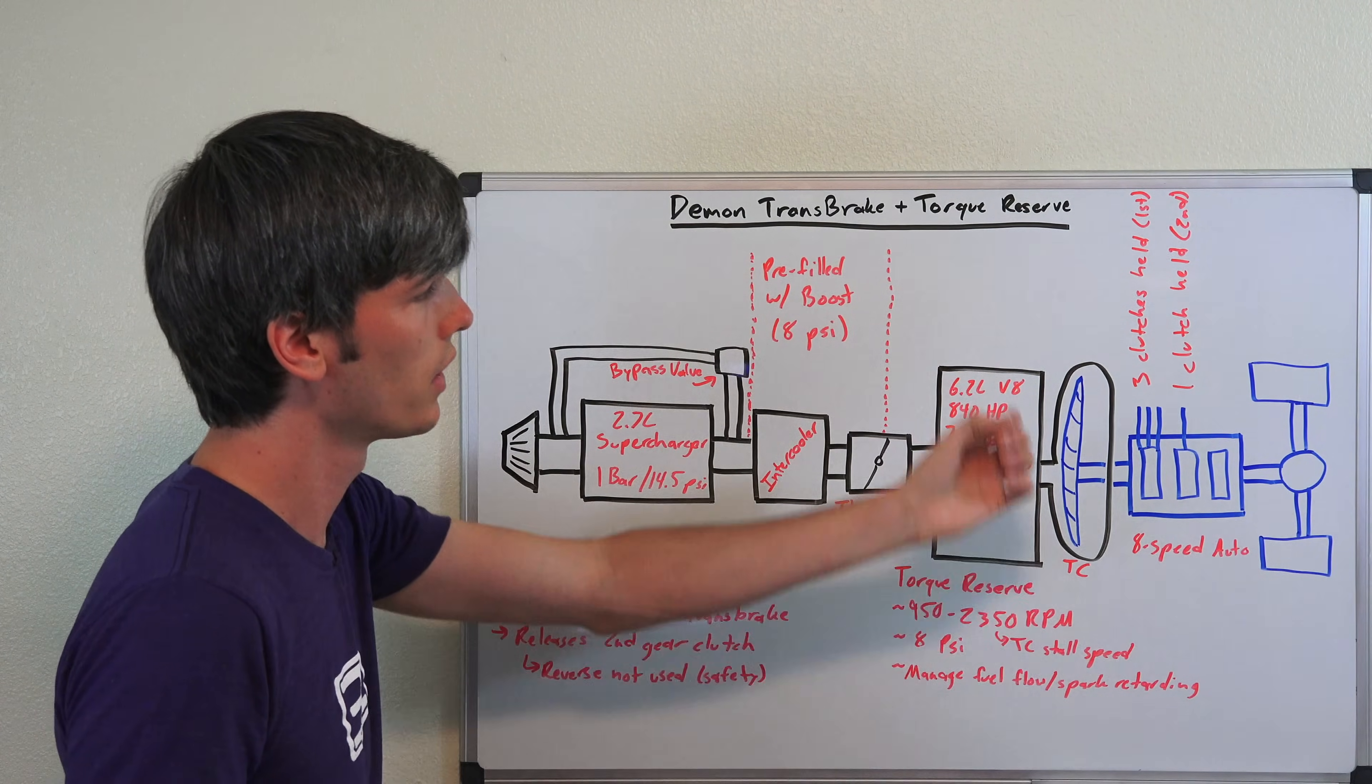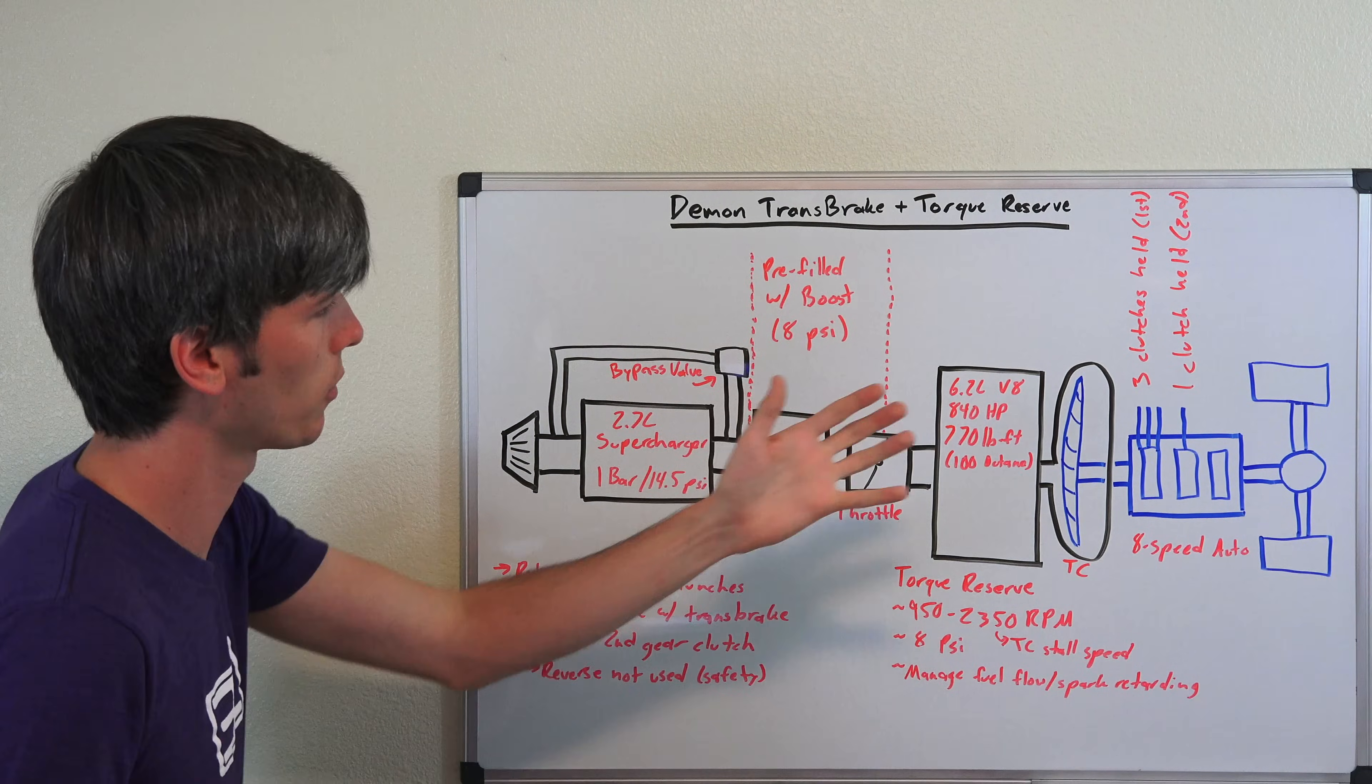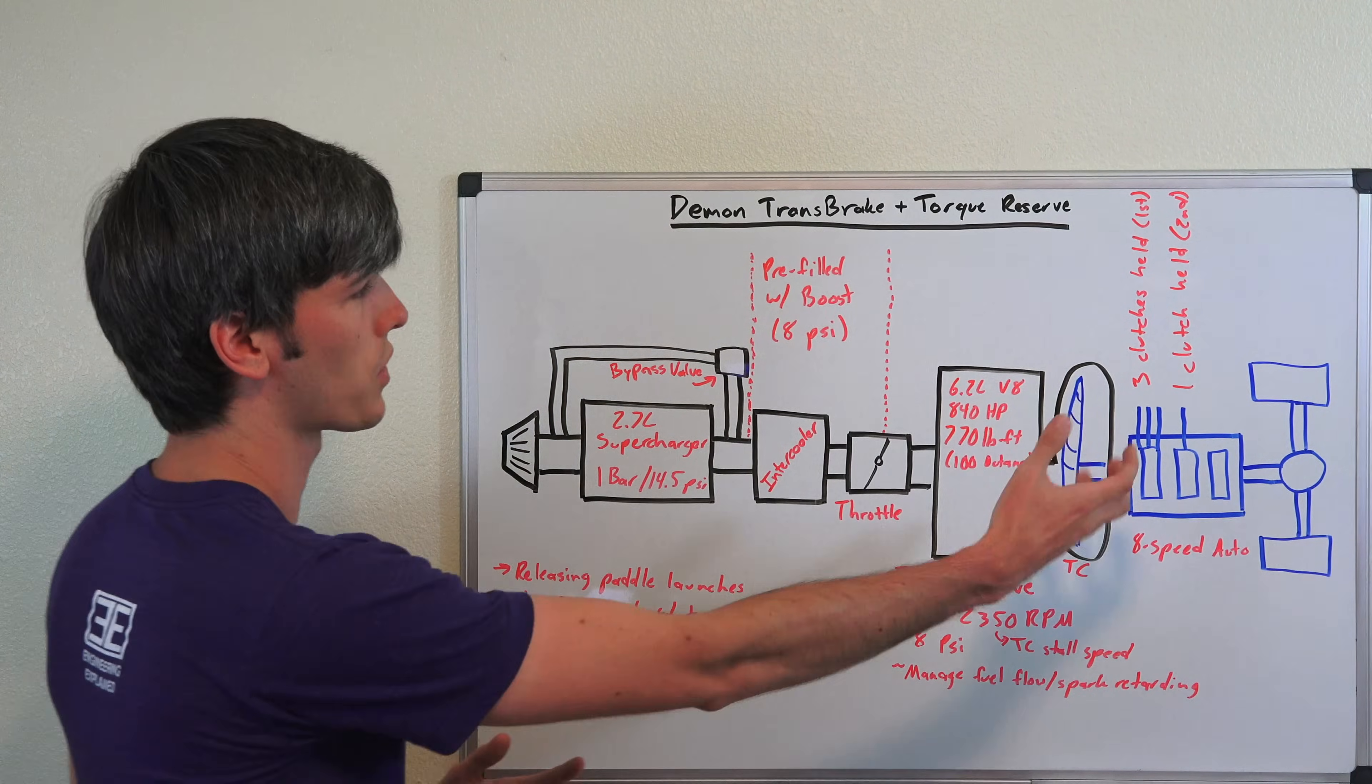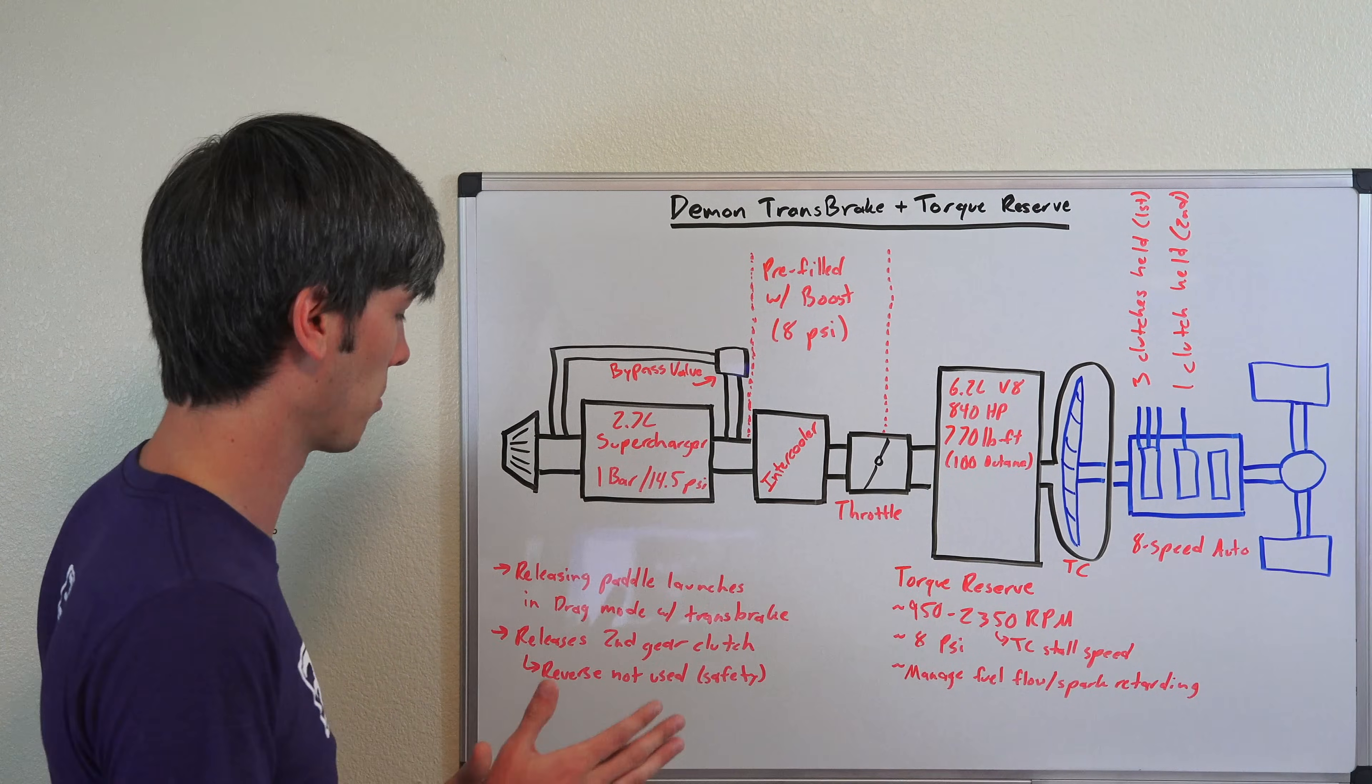So in the unlikely scenario that the transmission were to fail, you're going to have that car—no matter what, the only direction it can go is forwards. So that's basically built-in safety why they do first and second. But it is of course sized and built appropriately to be able to handle that torque and be able to hold the vehicle in place.